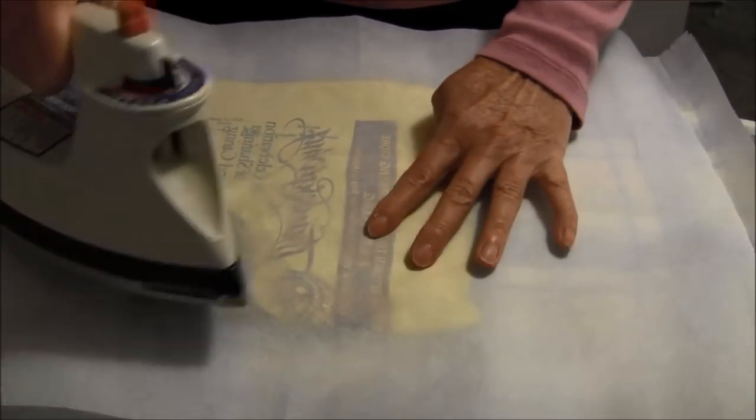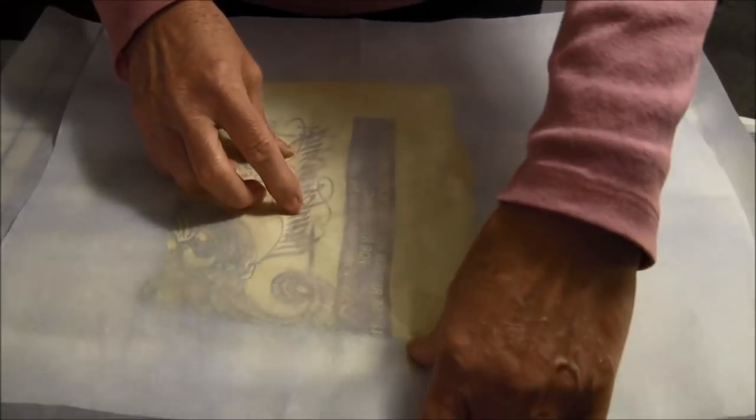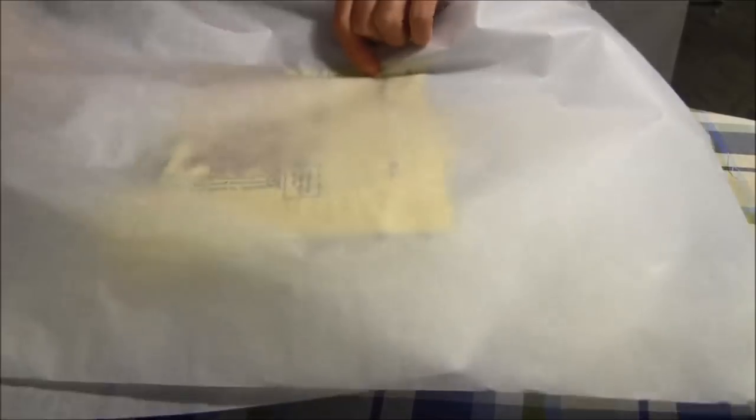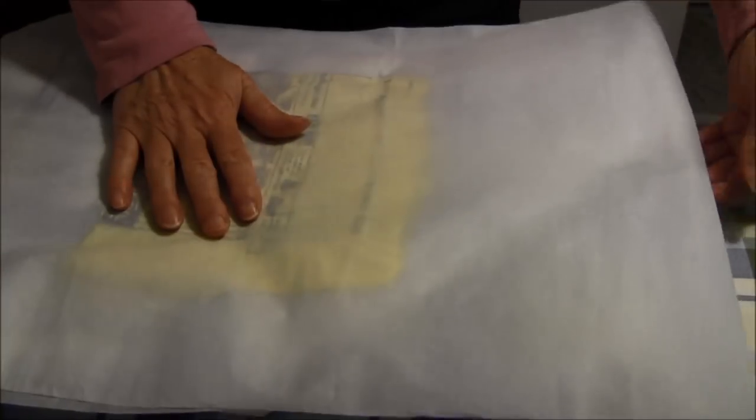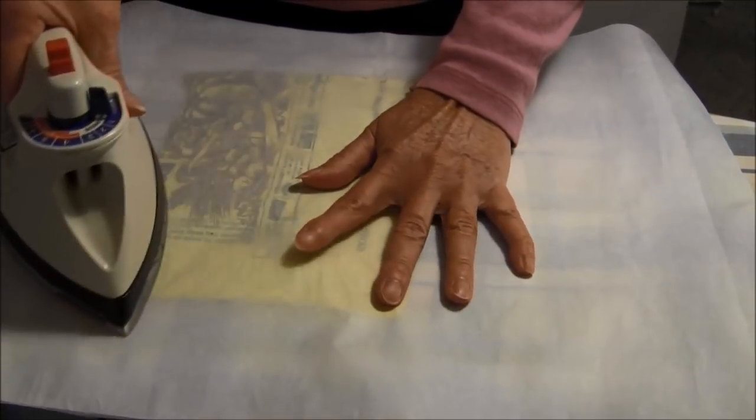Make sure your iron along the sides is good. What you need to do then is you need to flip it over and iron it on the other side.